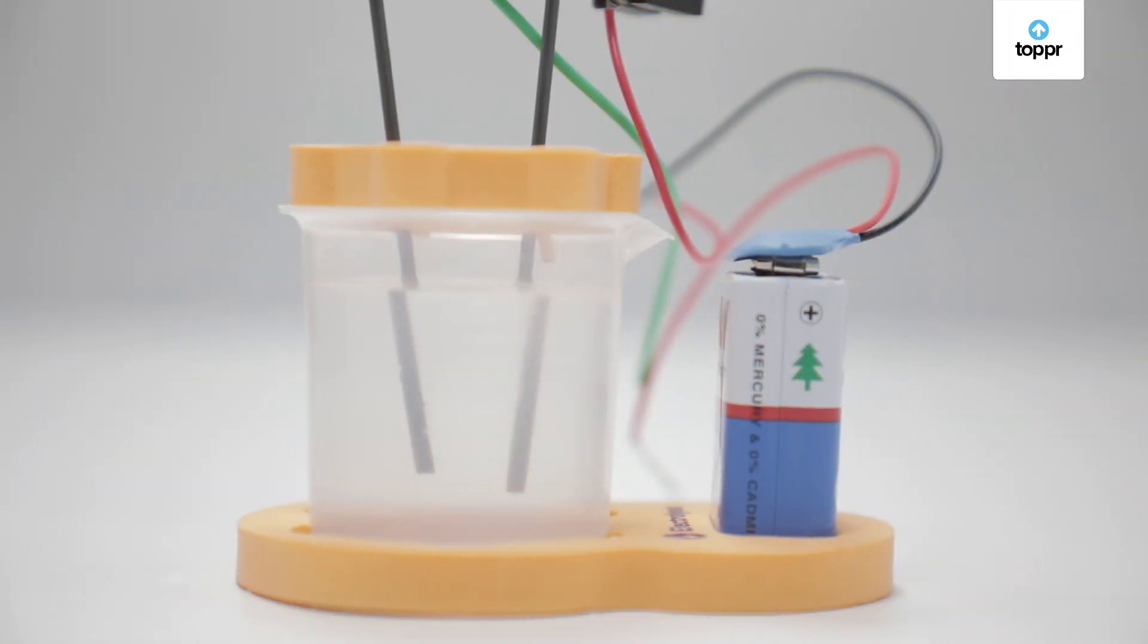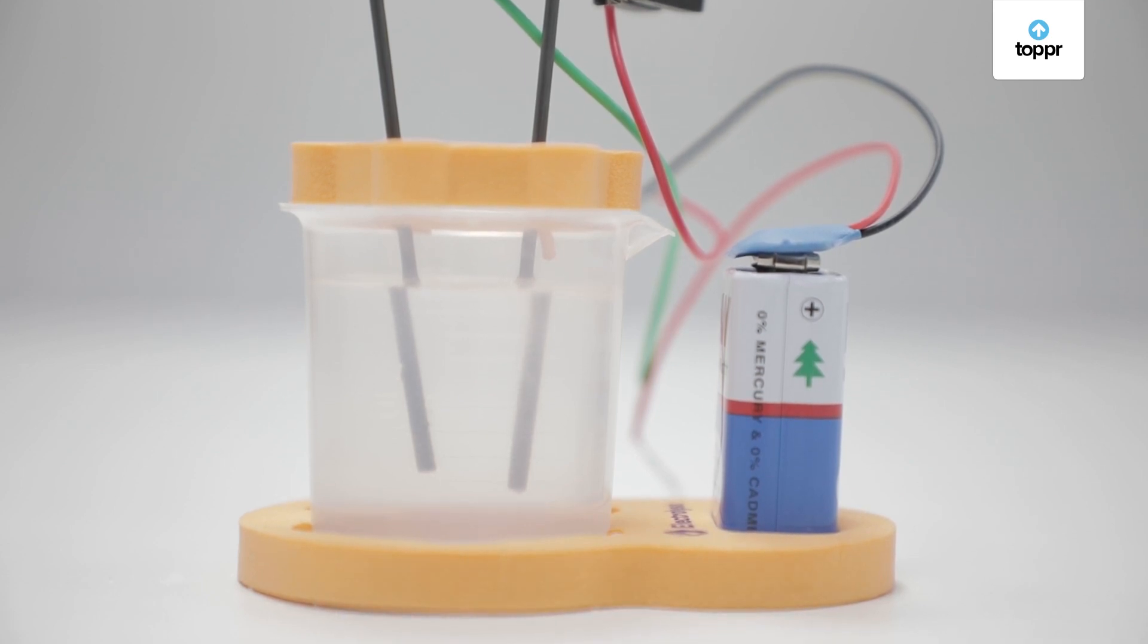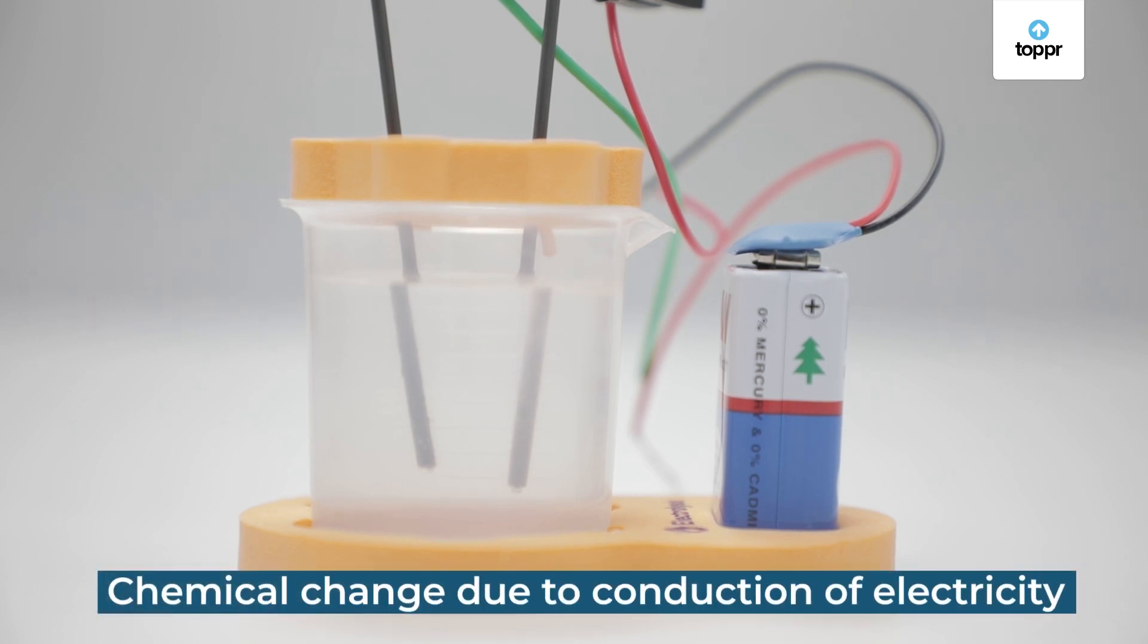The moment we put the rod inside the salt solution, electricity starts flowing through the solution. Observe the solution closely. You can see that bubbles are formed around one rod, which means that there must be some chemical change because of the conduction of electricity through the salt water solution.